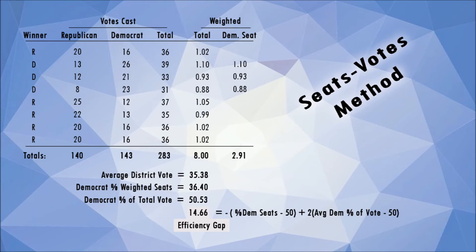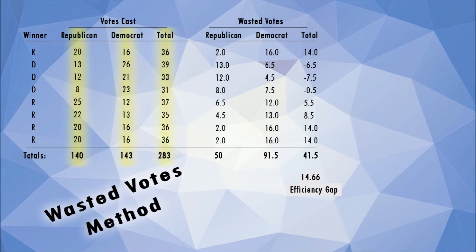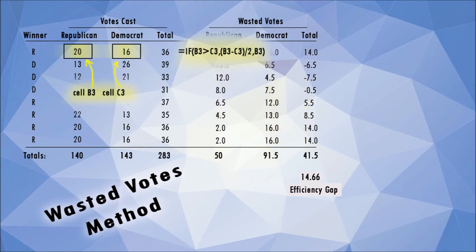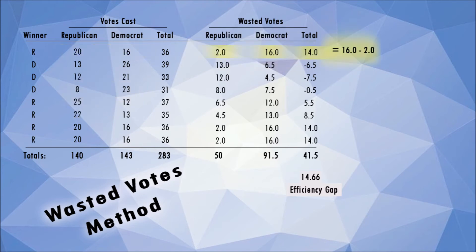Let's check our numbers by calculating the efficiency gap using wasted votes. Again, we have Republican, Democrat, and total votes, as well as Republican, Democrat, and total wasted votes. To calculate the Republican wasted votes, we have the Microsoft Excel formula where if the Republican candidate wins the district, the wasted votes are the difference between the Democrat and Republican votes divided by 2. If the Republican candidate loses the district, all of the Republican votes are wasted. This formula is similar for Democratic wasted votes. The total wasted votes is simply the difference between the two. Here we have it set up so a positive efficiency gap means that Republicans have gerrymandered, but the sign of the number varies from paper to paper — there is no standard, so be very careful in this step.